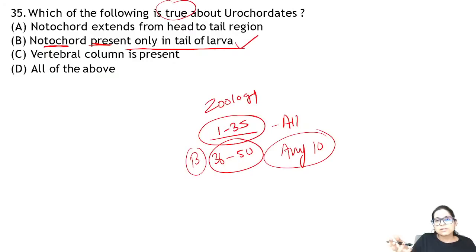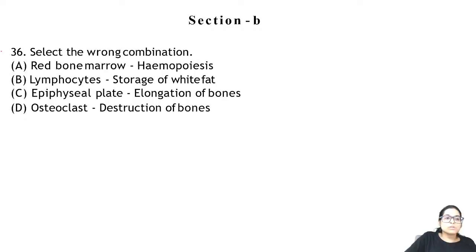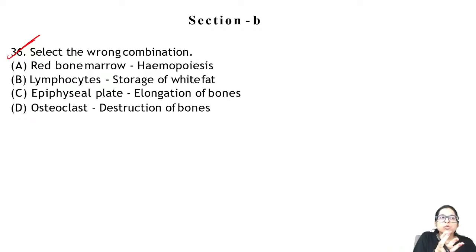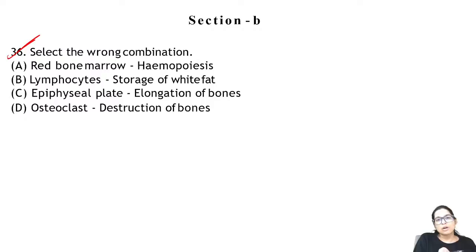In Zoology Section B, from questions 36 to 50, attempt any 10. Remember: NCRT is the source — questions cannot be created or destroyed, only converted from one form to another. Answer for question 36 is wrong — lymphocytes do not store white fat.